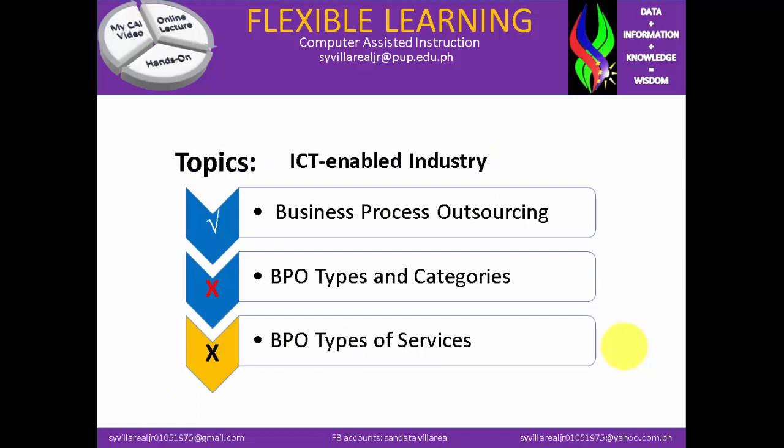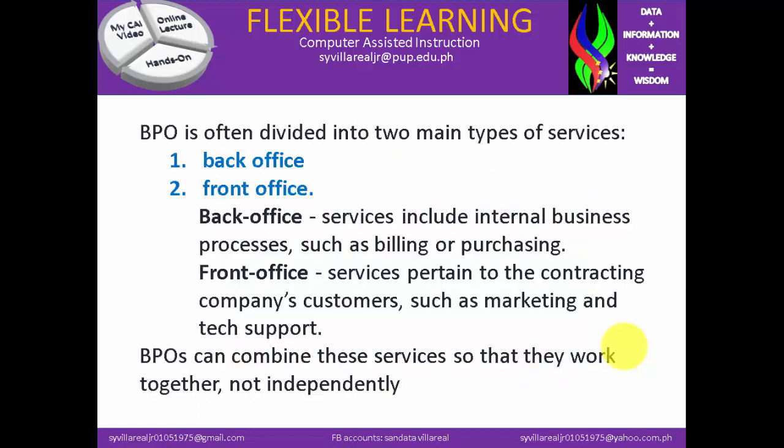Let's move on to BPO types and categories. BPO is often divided into two main types of services. First is the back office and second is the front office. The back office services include internal business processes such as billing or purchasing. The front office services pertain to the contracting company's customers, such as marketing and tech support. BPOs can combine these services — the back and front office — so that they work together, not independently.